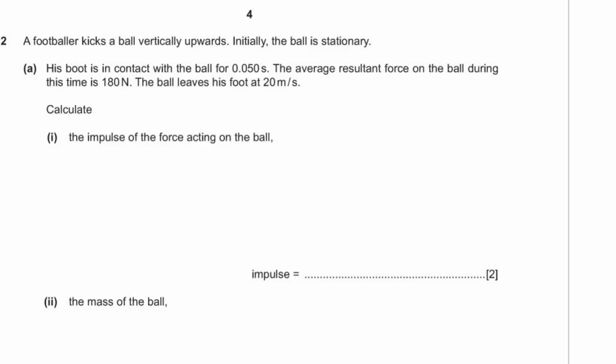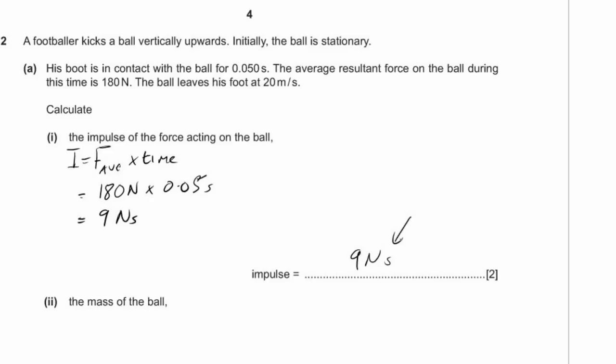Question two: a footballer kicks a ball vertically upwards. His boot is in contact with the ball for 0.05 seconds, the average resultant force is 180 newtons, and the ball leaves his foot at 20 meters per second. Calculate the impulse: impulse equals average force times time = 180 newtons × 0.05 seconds = 9 newton seconds.